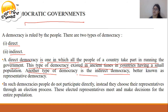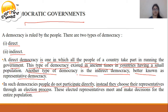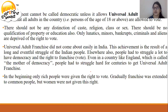Another type of democracy is indirect democracy, better known as representative democracy. In such democracies, people do not participate directly. Instead, they choose their representatives through the election process. A government cannot be called democratic unless it allows universal adult franchise, which means that all adults in the country are allowed to vote.